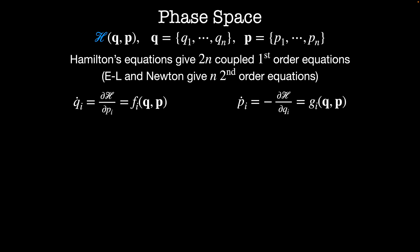This description of the dynamics is in contrast with both the Lagrangian and Newtonian methods, which give us n coupled second order equations for each system. We can write each of these as vector equations where the rate of change of the generalized vector Q is given by some vector function F, which is itself a function of the Q's and the P's. And likewise, the generalized momenta evolve according to some vector function G, which is again a function of Q's and P's.